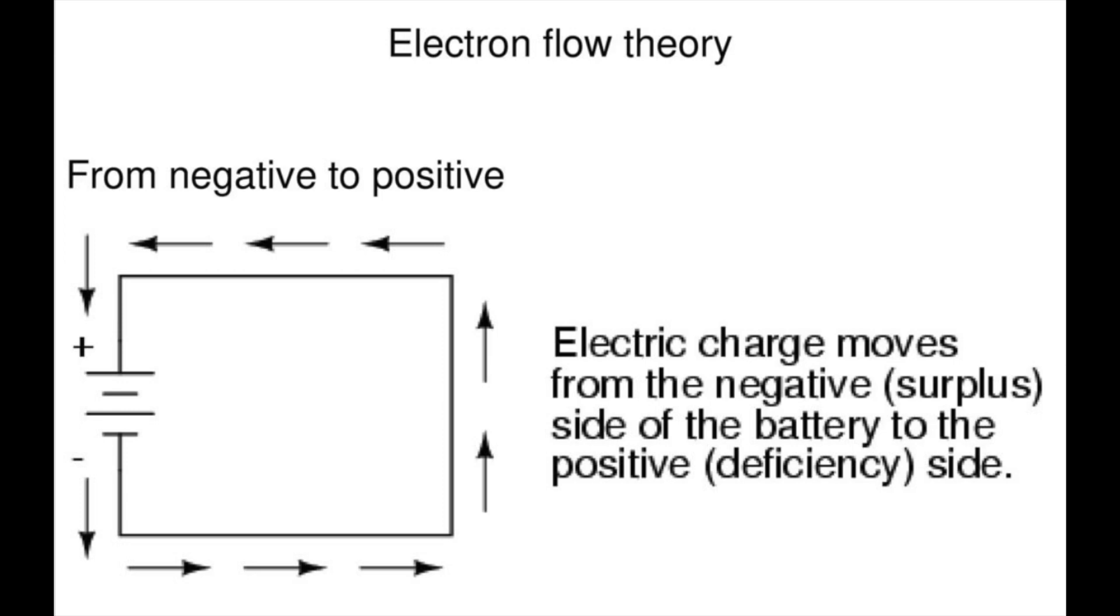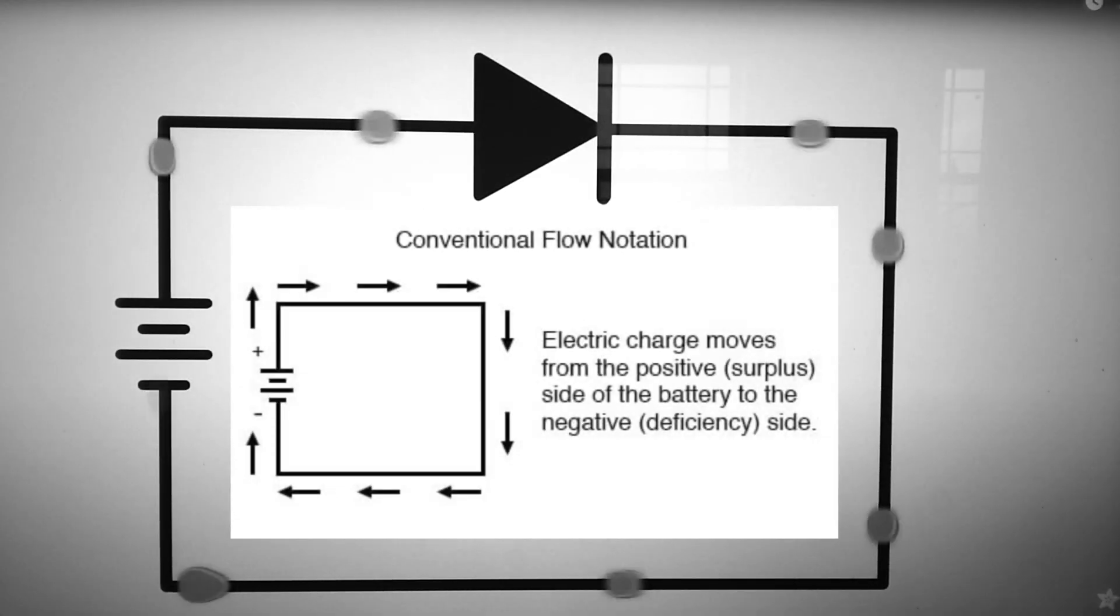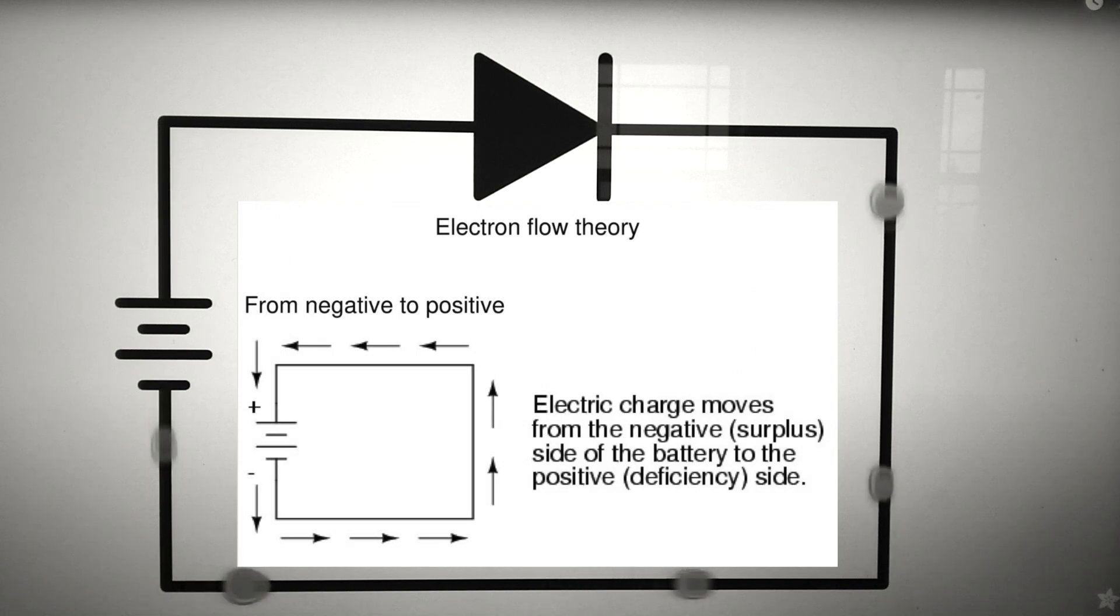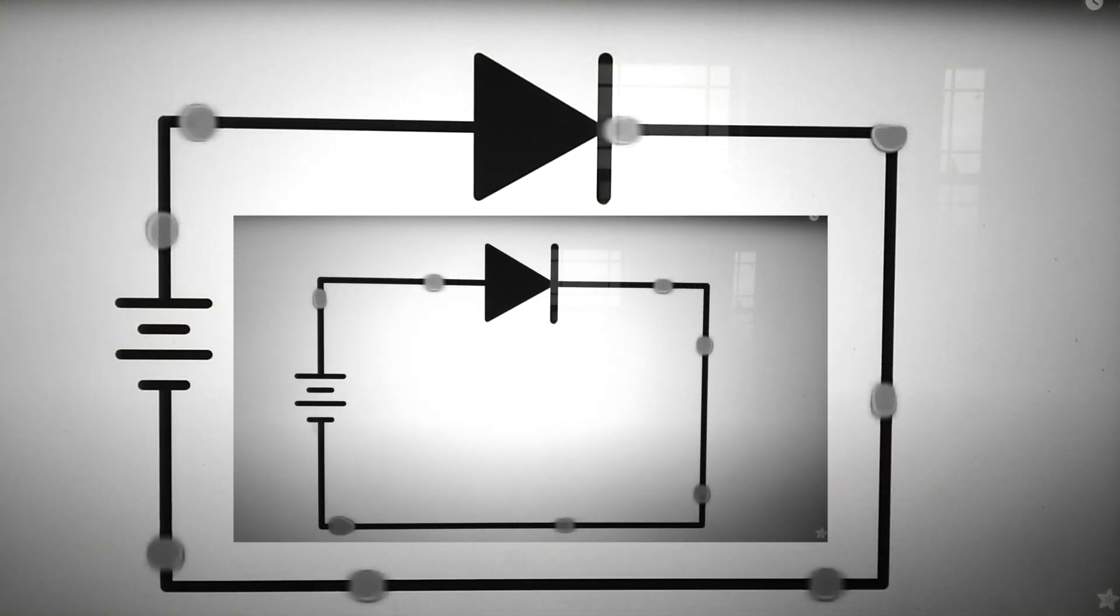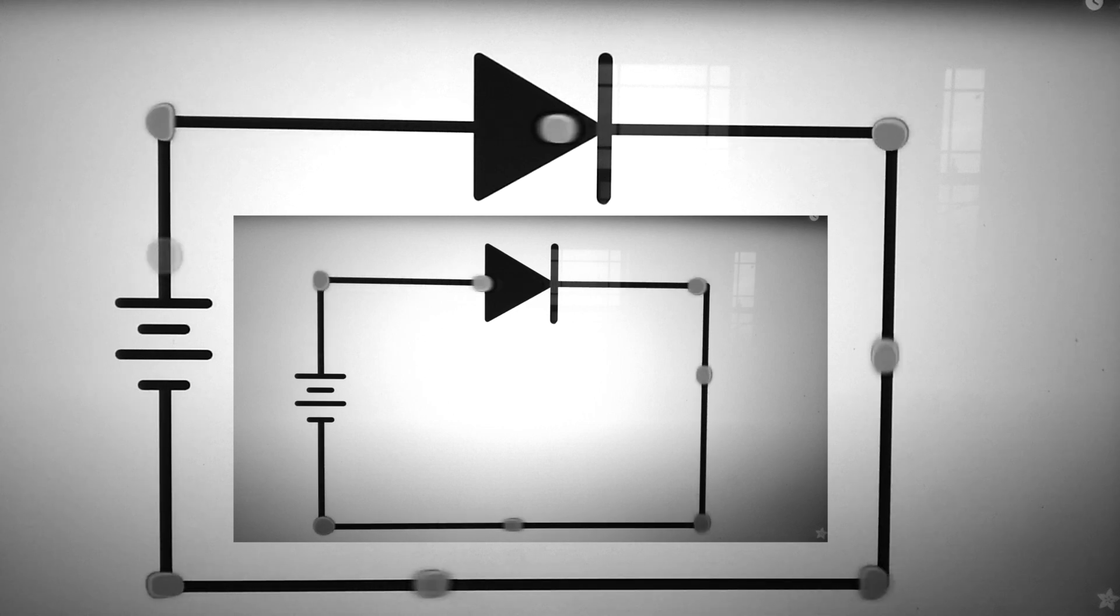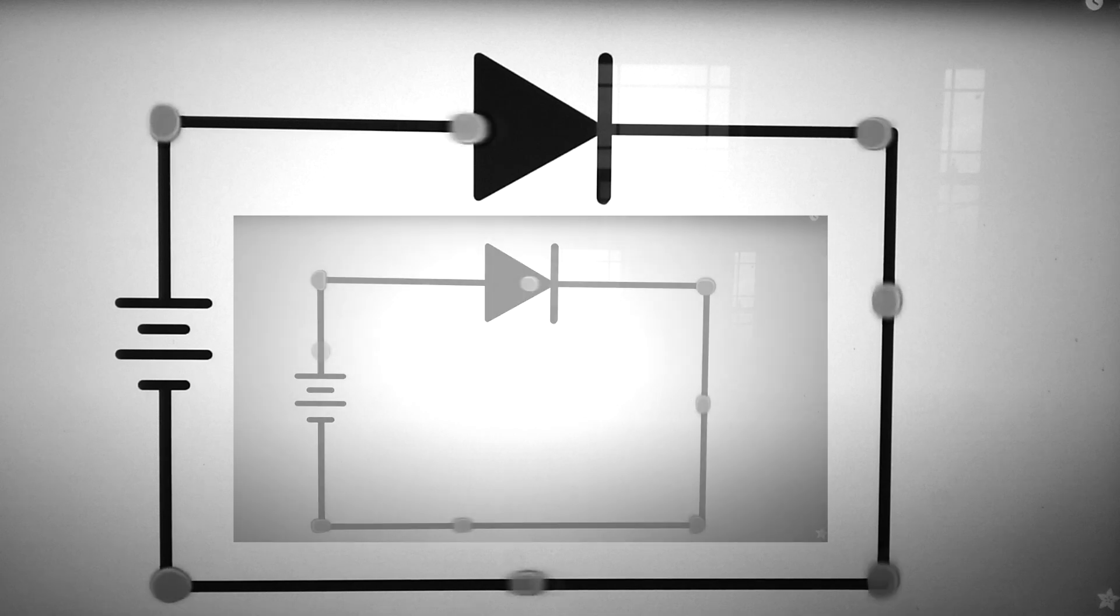And it's called the electron current flow. So if you personally hold to the convention that electric current flows from the positive to the negative and put a diode in a circuit, it will look like this, where the arrow in the diode symbol indicates the direction of the flow. And if you hold to the convention that electrons flowing from the negative to the positive is the current, the circuit with a diode will look like this. But notice that whether you hold to one convention or the other, the diode has the same orientation.